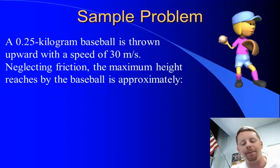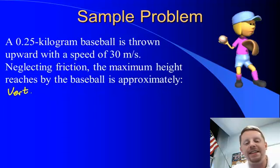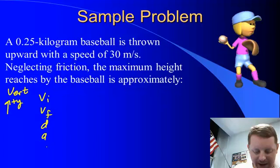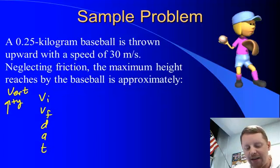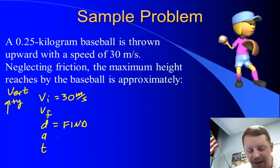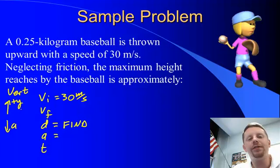Let's take a look at one last problem. A quarter-kilogram baseball is thrown upward with a speed of 30 meters per second. Neglecting friction, find the maximum height reached by the baseball. This is a vertical motion problem; the initial motion of the baseball is up, so let's call up the positive y direction. Our initial speed upward is 30 meters per second — that's positive. Acceleration due to gravity points down, opposite to what we called positive, so acceleration is negative 9.81 meters per second squared.